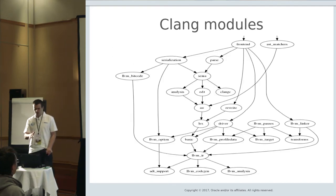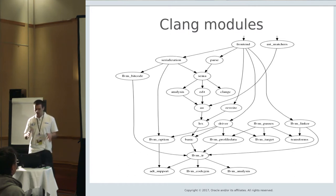By code assistance, I mean completion, navigation, highlighting, etc., for IDEs, so it's IDE friendly. This is an overview of Clang's structure. You can see that there are a lot of modules which form a hierarchy.